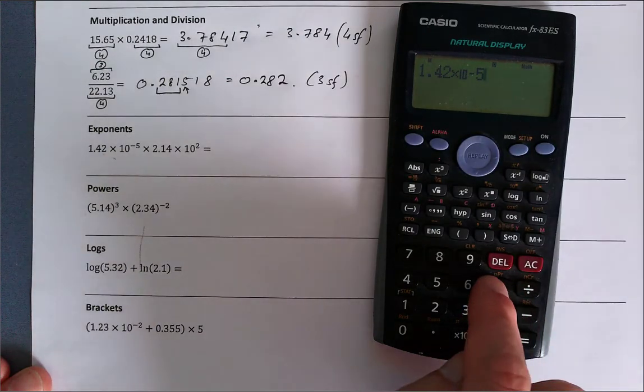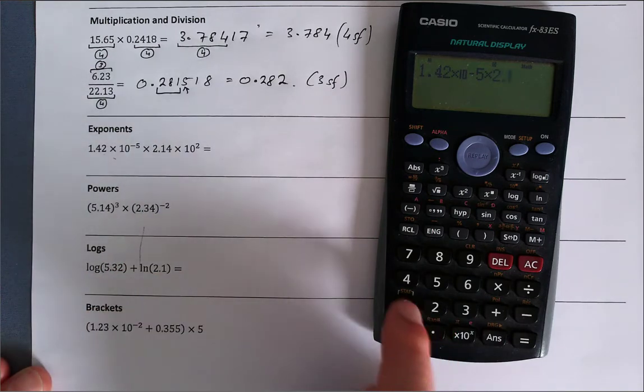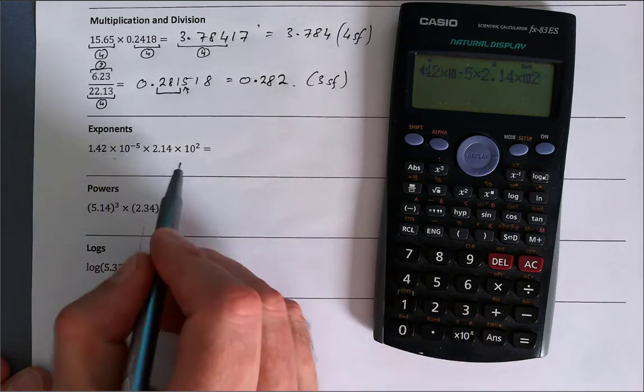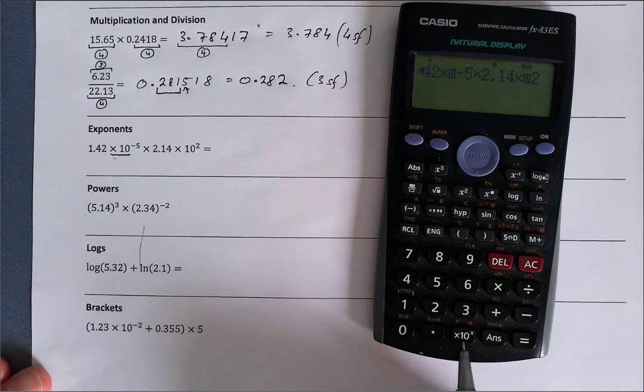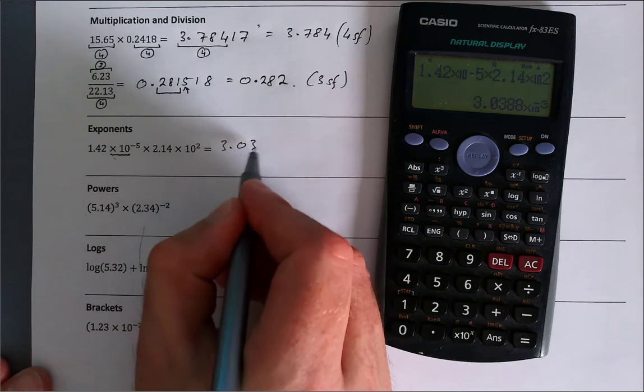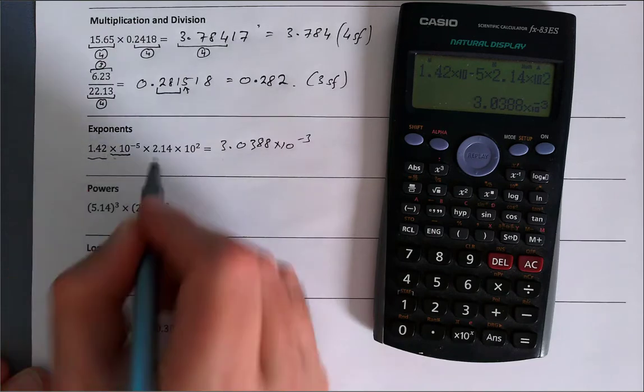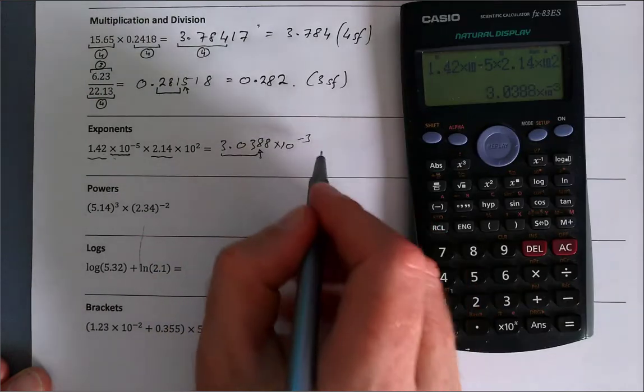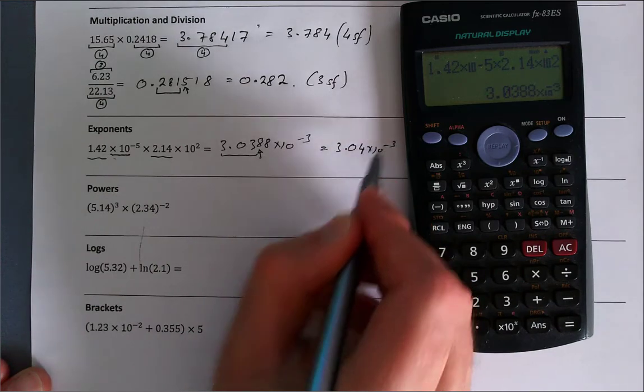The next operator is multiplied by 2.14 times 10 to the power of 2. A common mistake here is people type in the times 10 separately to the exponent, but this includes it all, so I can just press equals. And again, the old story here: 3.0388 times 10 to the minus 3. We've got three significant figures, three significant figures, so I'm going to quote this to three significant figures, rounding up because that's an 8. That gives me 3.04 times 10 to the minus 3.